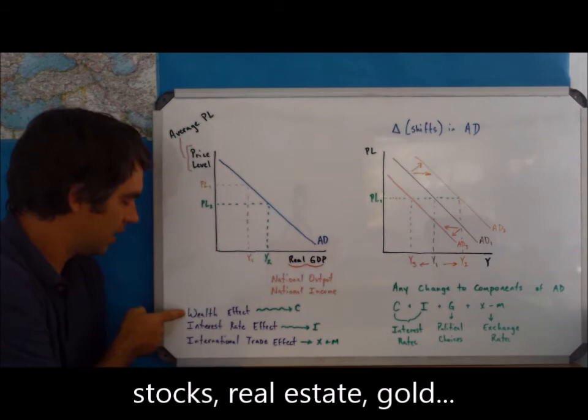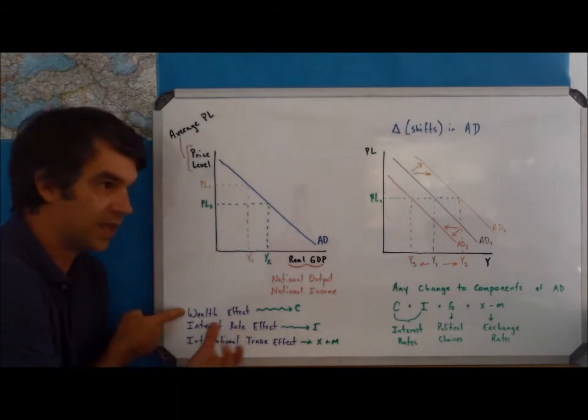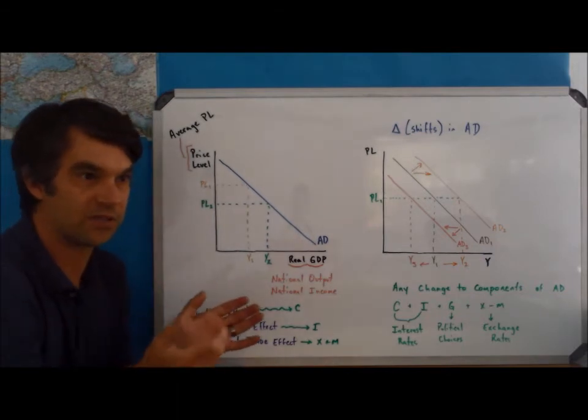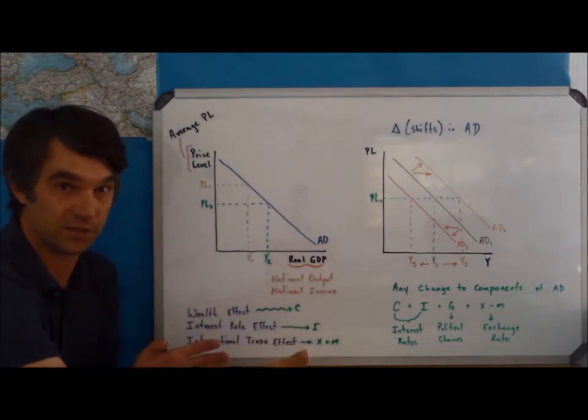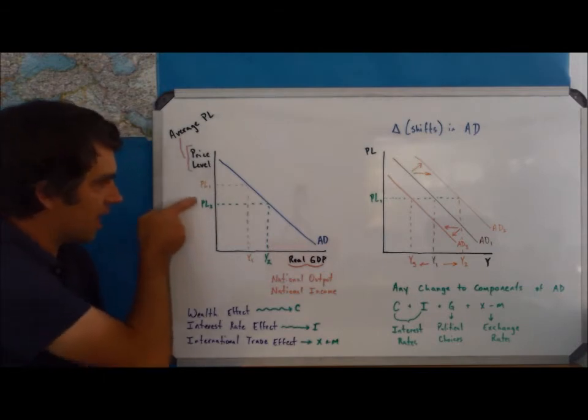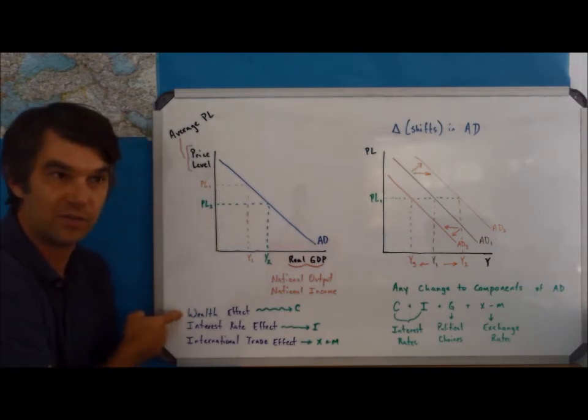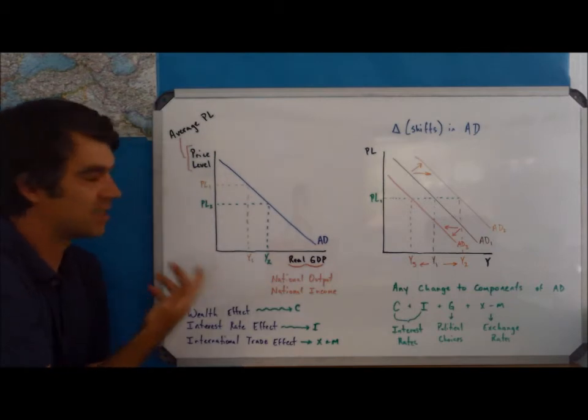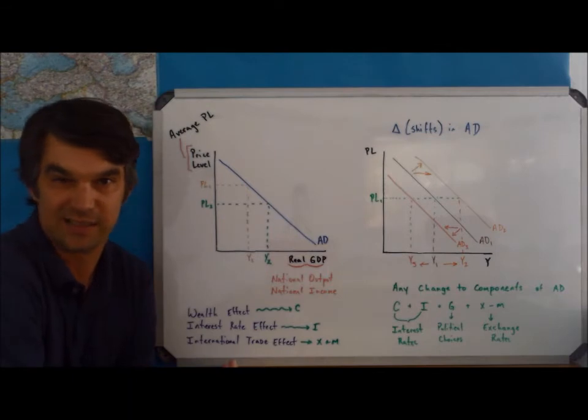Don't confuse the word wealth with income. Income is the amount of money I earn for my work. Wealth is the value of things that I already own. So, let's say that I buy a stock and I buy stocks that are worth one thousand dollars. And I could have, instead of buying stocks for one thousand dollars, I could have bought a certain amount of other goods and services.